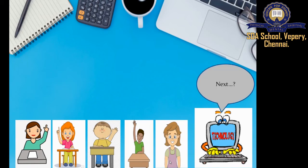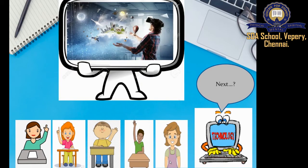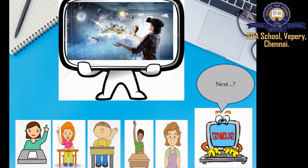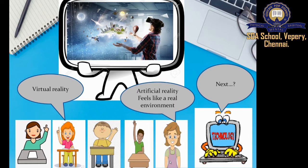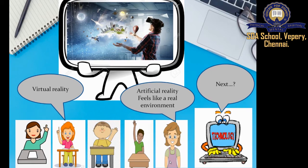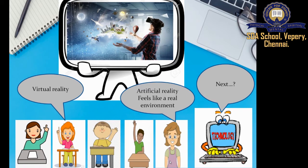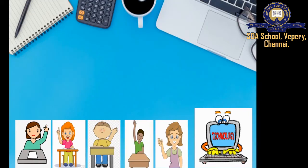The next one is Virtual Reality. It is also called artificial reality, and it feels like a real environment. The components used are goggles, gloves, and earphones.